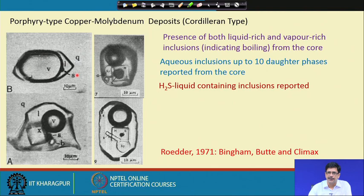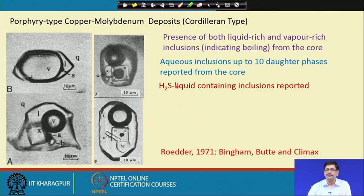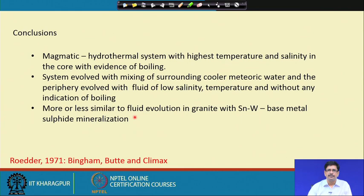These inclusions homogenize at very high temperatures, almost greater than 600–700°C, giving a definitive indication that these deposits originated from a magmatic fluid. The presence of both liquid- and vapor-rich inclusions, and sometimes inclusions containing H₂S, is noted. In older literature, interpretations were made from crushing stages where gas could be observed under a microscope and then identified.